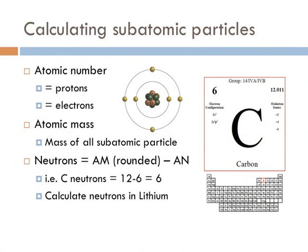From that, we can figure out how many neutrons there are. In the case of carbon, the atomic mass is 12.0 and the atomic number is 6. If we subtract the number of protons from the atomic mass, we get 6. So there are 6 neutrons. Try to calculate the neutrons in lithium. Lithium has an atomic number of 3 and an atomic mass of 7. It has 3 protons and 4 neutrons.